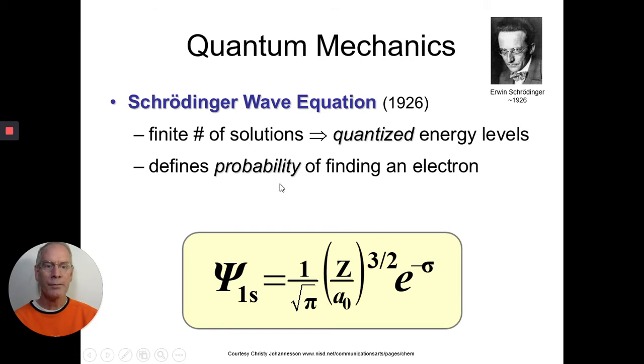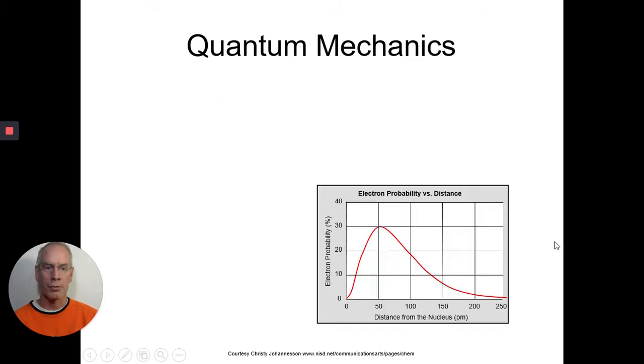So it defines the probability of finding an electron. In an orbit, the Bohr model, that was a fixed path. But with the quantum mechanical model, we get orbitals, which are probable regions of where we think we'll find the electron based on the math of Schrödinger.